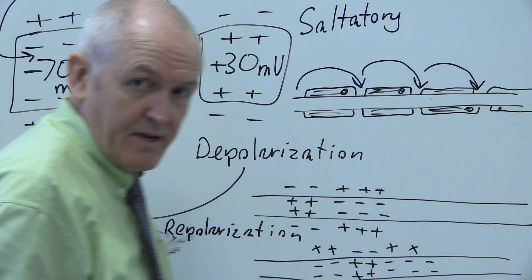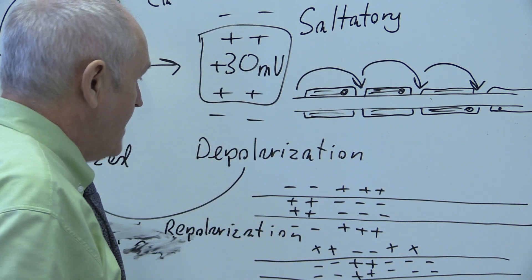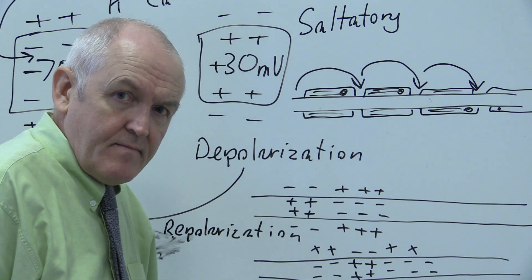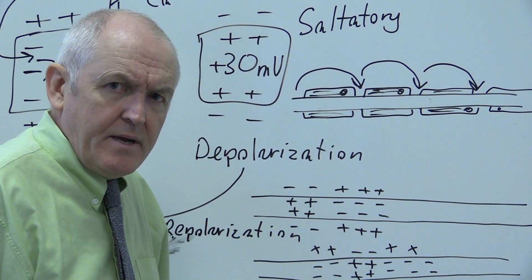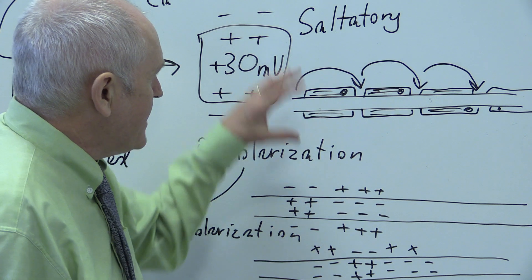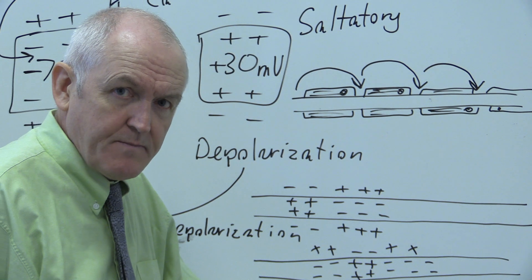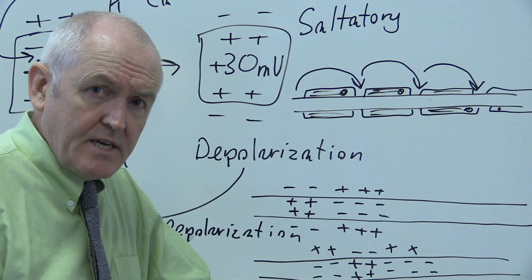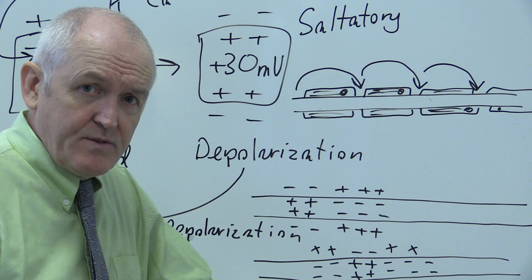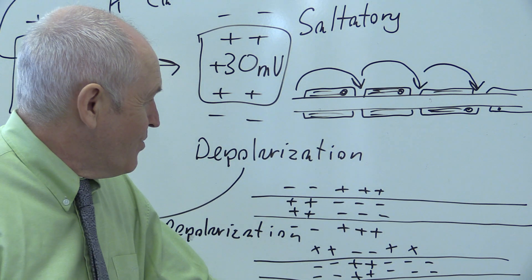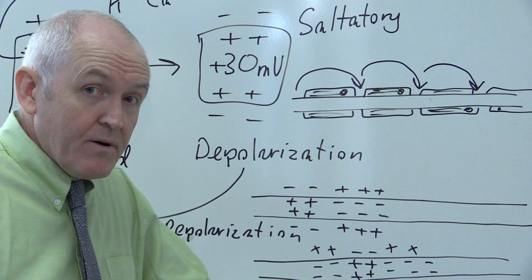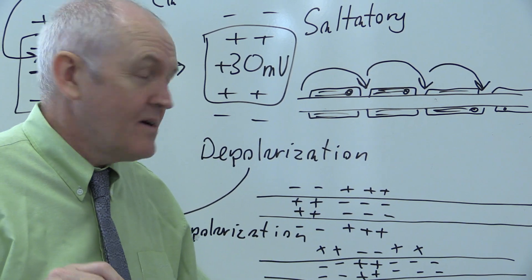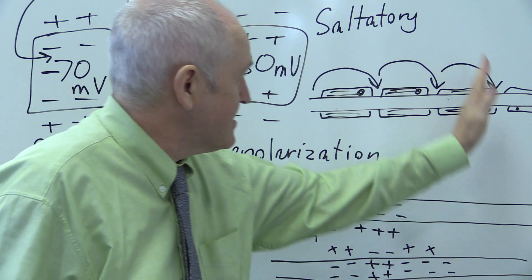Saltatory transmission is way faster — it can be 100 meters per second or faster, as opposed to the slower wave of depolarization which is only a meter or two per second. In the body, people sometimes talk about A, B, and C type nerve fibers. The A and B fibers are myelinated with rapid transmission. The C fibers are unmyelinated, so in C fibers the impulse has to spread down the fiber via this wave of depolarization without taking the shortcut from one node of Ranvier to the next. But whatever the nerve impulse, the action potential is this progressing wave — or progressing sections in this case — of depolarization carrying this electrical activity.